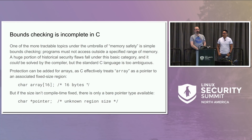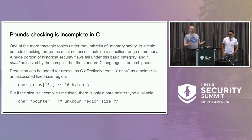But if it's not a fixed size at compile time, in the C language you're basically just left with a pointer, which has no information about how large the region is you're pointing to. That's just the basic type available — you have no choice.